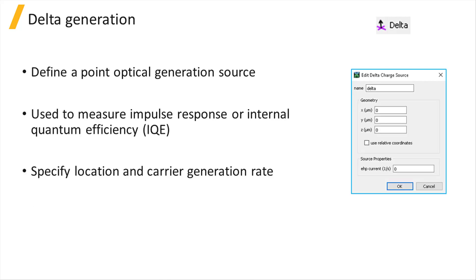The delta generation source object models the optical generation as a delta function to create a point source. This can be used, for example, in measuring the internal quantum efficiency of photosensitive devices. For step-by-step instructions on how to use this object for measuring internal quantum efficiency of a CMOS image sensor, please visit the related links below.